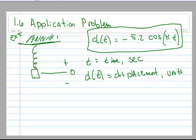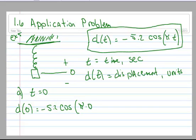So, let's do an example and see how this works. We want to know when time is zero, when t is zero, where this block is right here on the end of the spring. So, d of zero is going to equal negative 5.2 times the cosine of pi times zero.